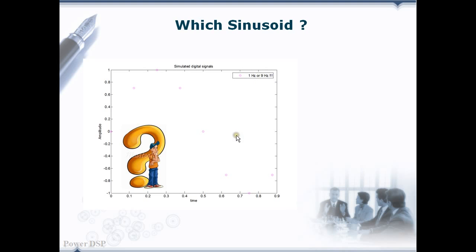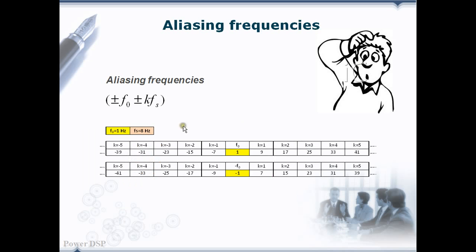Suppose if we have an input signal which contains both of these 1 Hz and 9 Hz signals, then how can we differentiate the 1 Hz and 9 Hz? This is not the only case which gives identical samples and there are innumerable frequency components which will give the same samples. Here, we can see those frequencies F0 plus K times Fs.